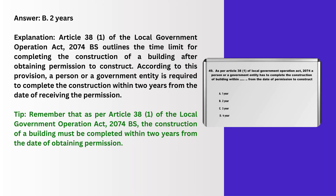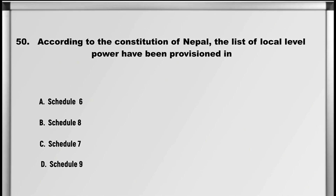Explanation: Article 38(1) of the local government operation act 2074 BS outlines the time limit for completing the construction of a building after obtaining permission to construct. According to this provision, a person or a government entity is required to complete the construction within two years from the date of receiving the permission. Tip: as per article 38(1) of the local government operation act 2074 BS, the construction of a building must be completed within two years from the date of obtaining permission.